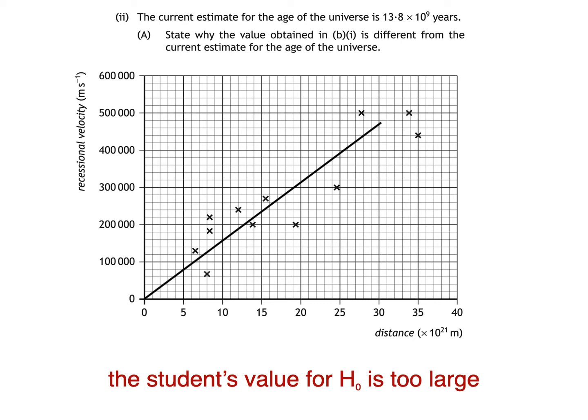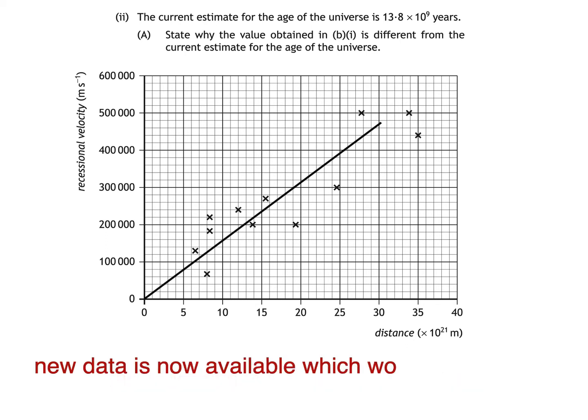If you remember all the way back to the start of part B, we were told that the student plotted some of the original 1929 data, and quite a bit of time has passed since then. So it's also suitable to write that new data is now available, which would give us a more accurate value for H0.